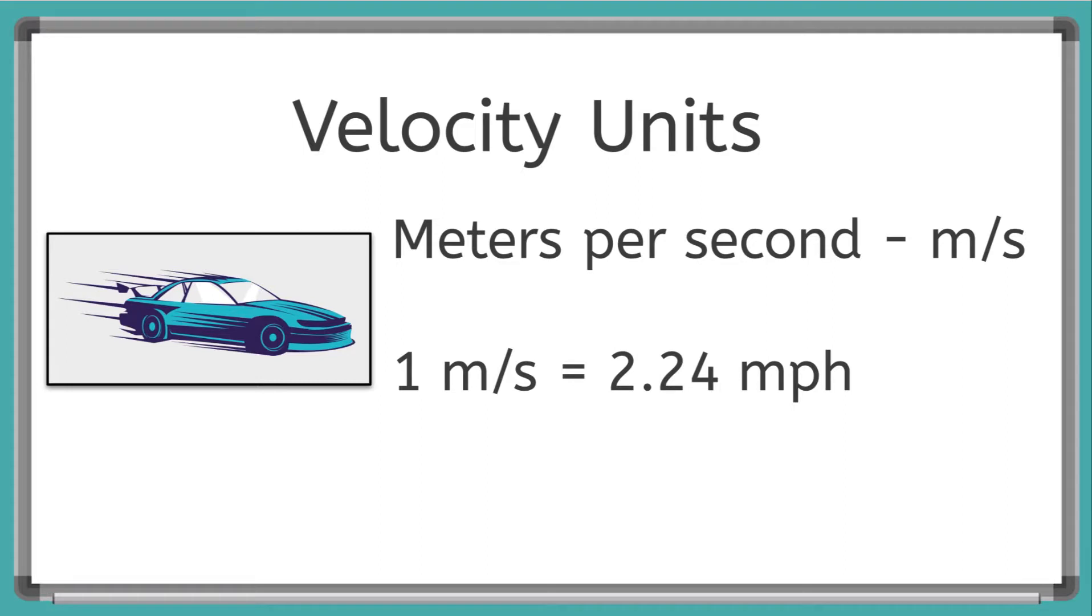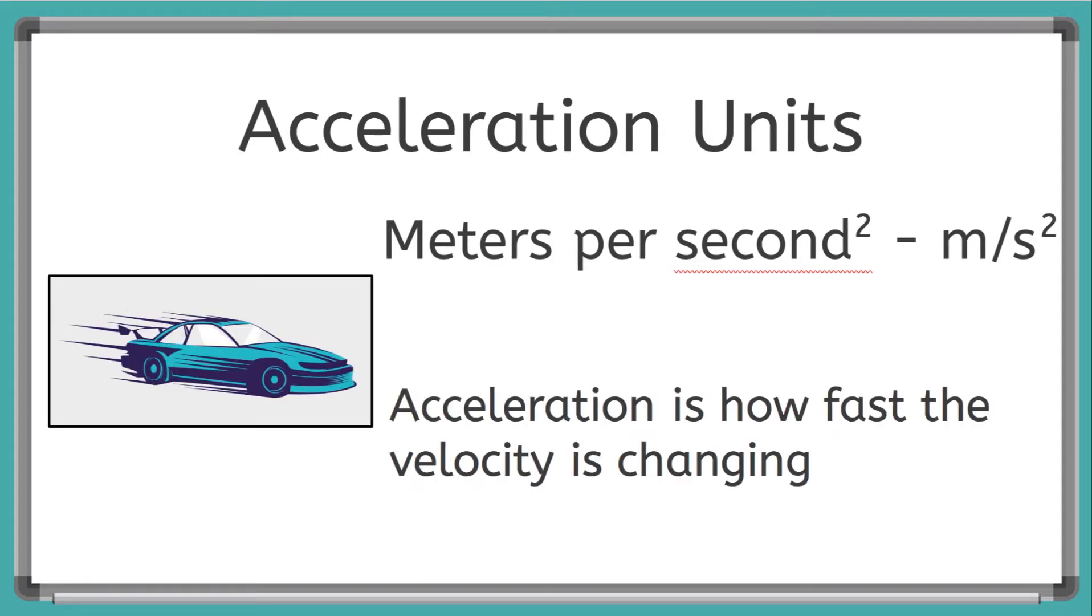For velocity, we use the units meters per second. When we're using the unit in an equation, we use the letters m/s to represent meter per second. For acceleration, we use the unit meters per second squared. When we're using the unit in an equation, we use the letters m/s² to represent meters per second squared. Acceleration is how fast the velocity of an object is changing.